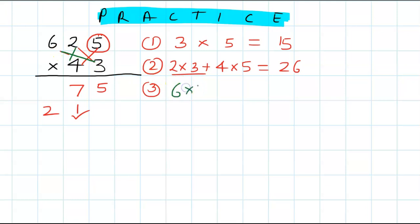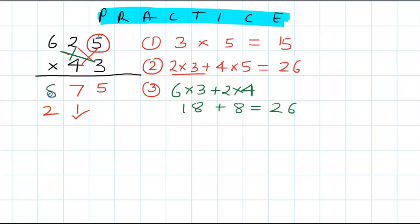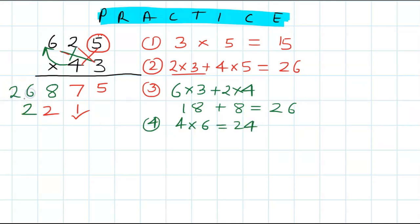Step 3: 6 times 3 and 2 times 4 — that's 18 plus 8 = 26, plus carry 2 gives 28. Write 8 and carry 2 forward. Last step: 4 times 6 is 24, plus carry 2 is 26. Final answer: 26875.